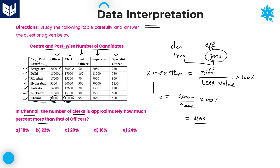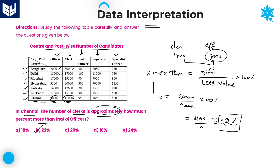200 divided by 9 equals approximately 22 percent. We don't need the exact value since the question asks for an approximate value. As the only option starting with 22 matches our calculation, the approximate answer is 22 percent. Option B is the right answer.